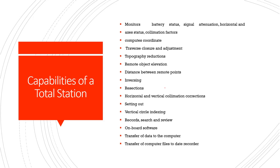The next capabilities include: battery status monitoring, signal attenuation, horizontal and vertical axis status, collimation factors, compute coordinates, traverse, closure and adjustment, topographic reductions, remote object elevation, distance between remote points, inversing intersections, horizontal and vertical collimation corrections, setting out, vertical circle indexing, record search and review on-board software, transfer of data to the computer, and transfer of computer files to the data recorder.